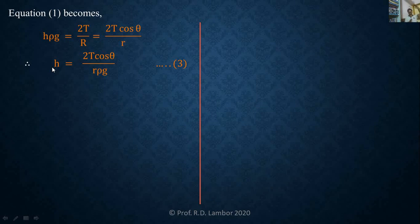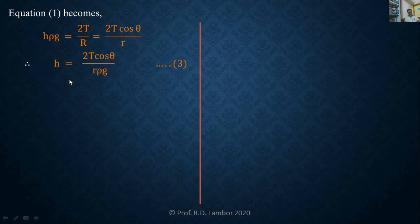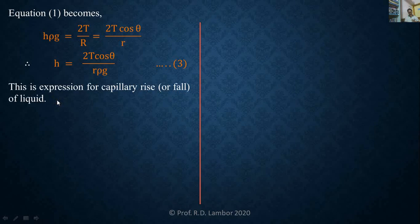When a liquid rises inside the capillary, H is positive. When a liquid falls, H is negative. For liquids that rise inside the capillary, the angle of contact is less than 90 degrees, and cos of an angle less than 90 is positive, giving H positive. For liquids that fall, the angle of contact is obtuse (greater than 90), and cos of that angle is negative, giving H negative — meaning capillary fall.